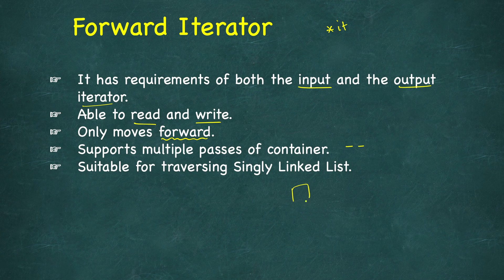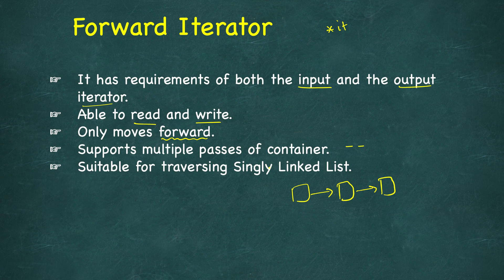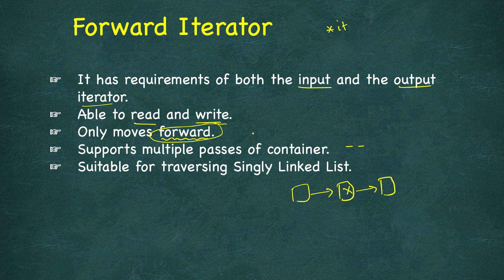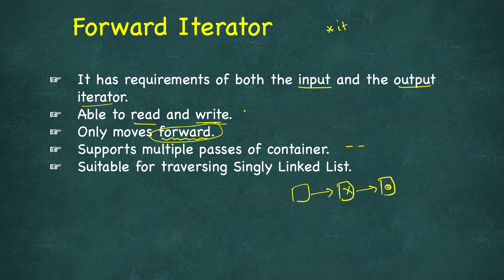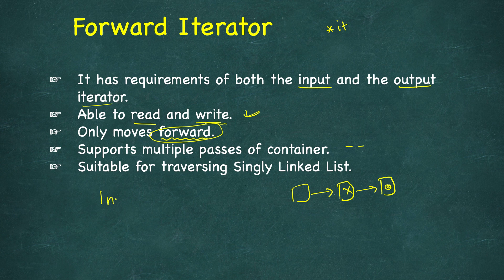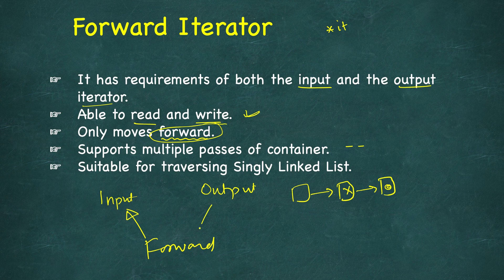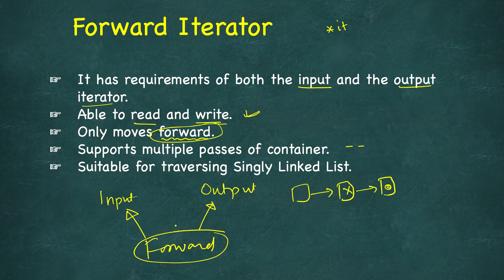You don't need the capability to move backward. You are happy with forward capability, and you may want to modify the value in a list or read the current value - you need this functionality. You can relate that if we have input iterator and output iterator, forward iterator combines them. You inherit from these two - you combine the capabilities of these two to form forward iterator.